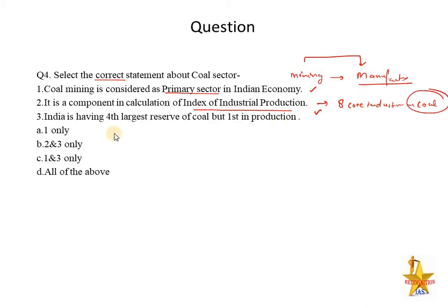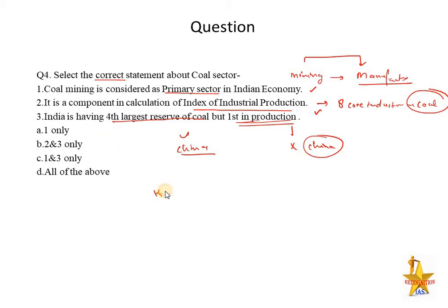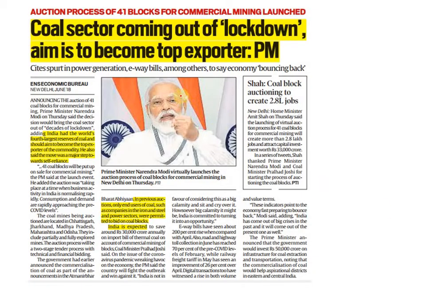The third statement — India has the fourth largest reserve of coal — is correct. China has the largest reserves, and India is fourth. However, in production too, China ranks first, not India. So the third statement is wrong. Only the first and second statements are correct — answer would be first and second correct. The news cutting shows PM Modi stating that India should aim to become a top coal exporter, since coal is a highly demanded commodity.